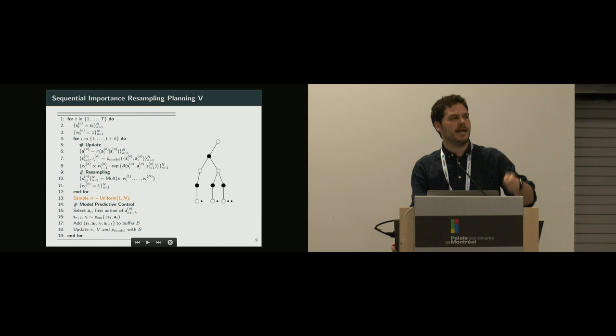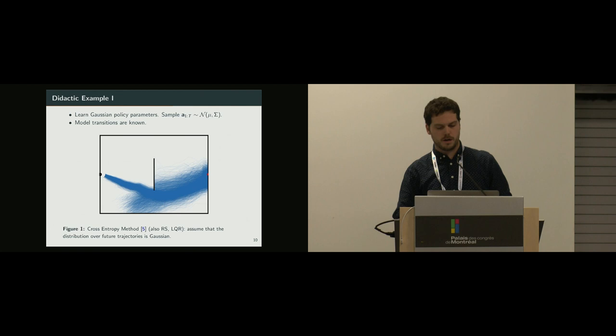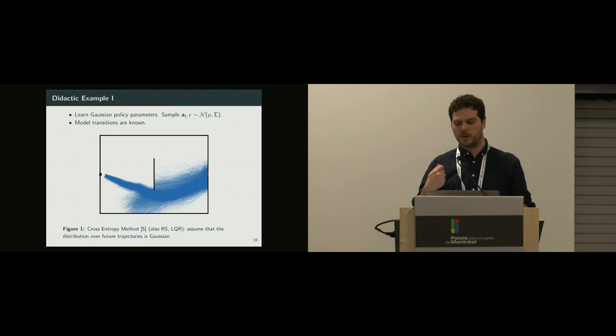So how does that compare to a traditional planning method? One that is very popular is the cross-entropy one. Before I start, let me just say that here with the black dot, we try to get to the red star. It's a bit small, sorry. So yeah, cross-entropy method is very popular. It's a stochastic optimization procedure. So you start by sending some particles. You look at the k-best, you estimate a mean and a covariance, and you do that iteratively to find your best trajectories.